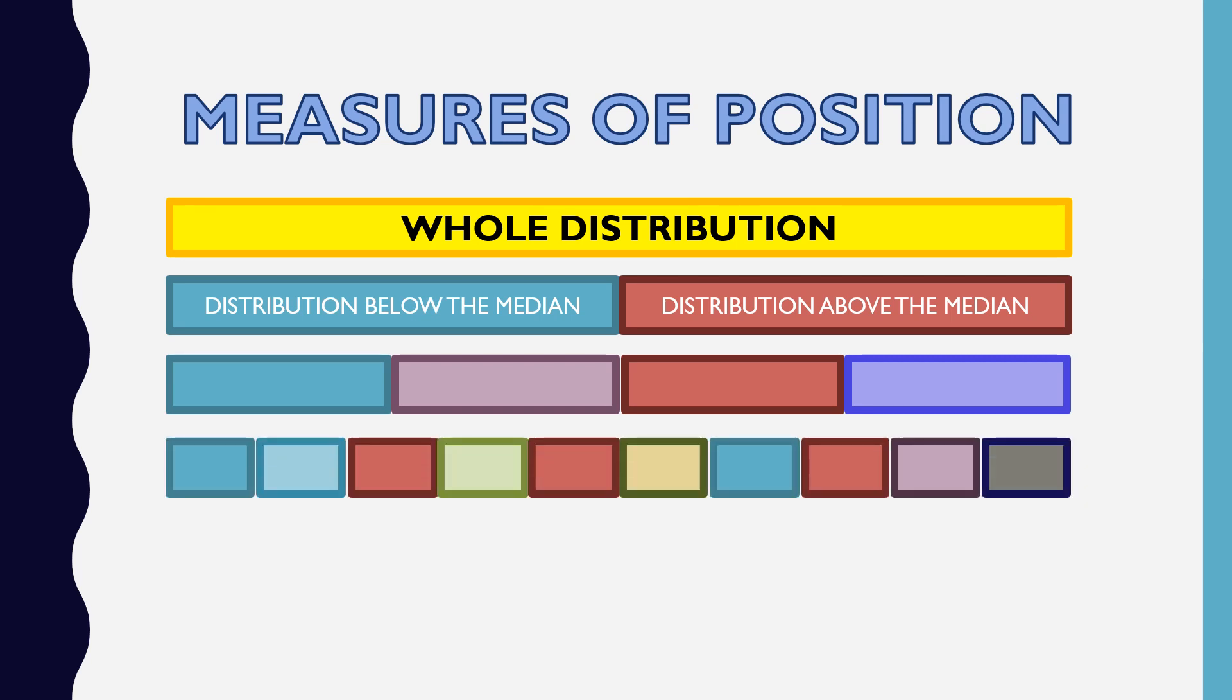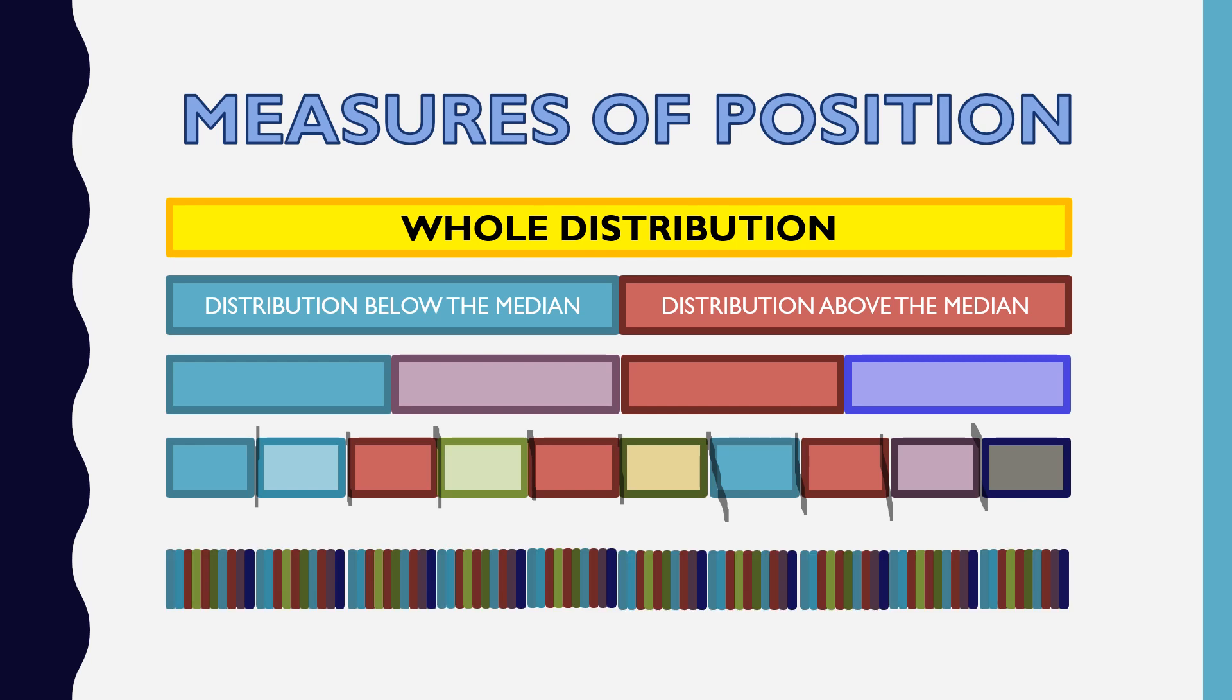When the whole distribution is divided into ten equal parts, tinatawag natin itong deciles. Yung partition values niya are called deciles. And if the whole distribution is divided into 100 equal parts, yung partition values natin tinatawag nating percentiles.